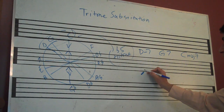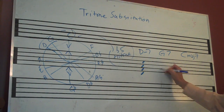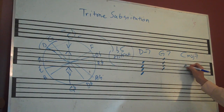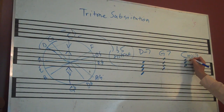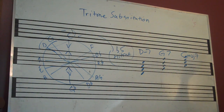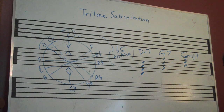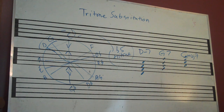The chords would look like this: D, F, A, C for D minor 7; then G, B, D, F for G7; and C, E, G, B for C major 7. Let's listen to that 2-5-1 quickly — D minor 7 to G7 to C major 7.